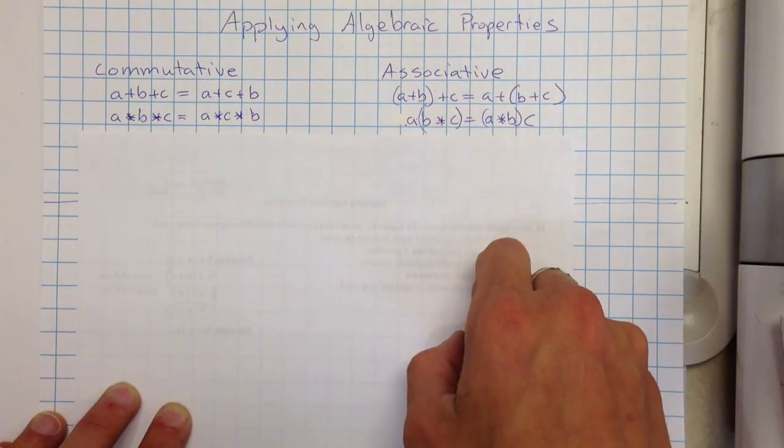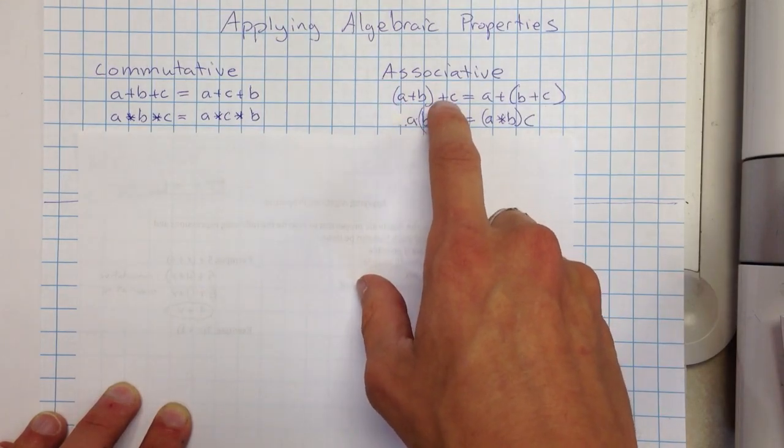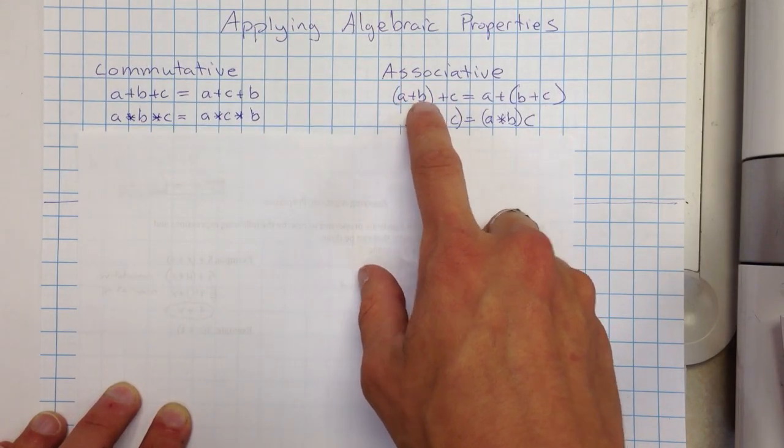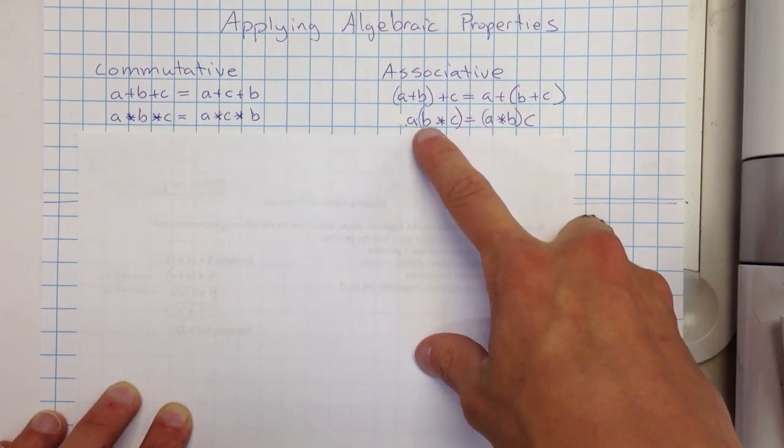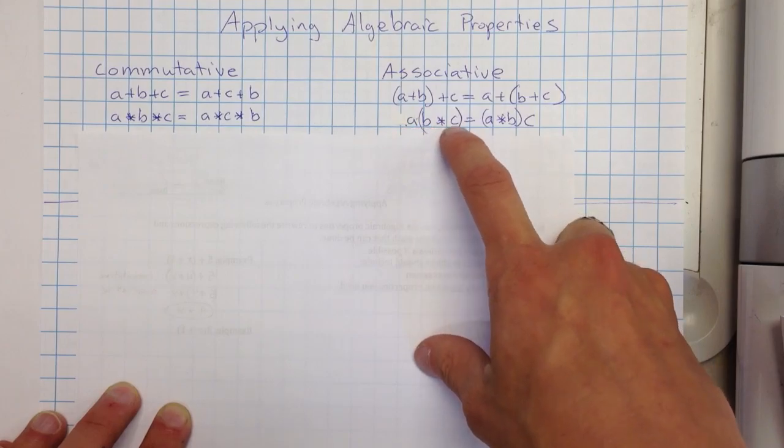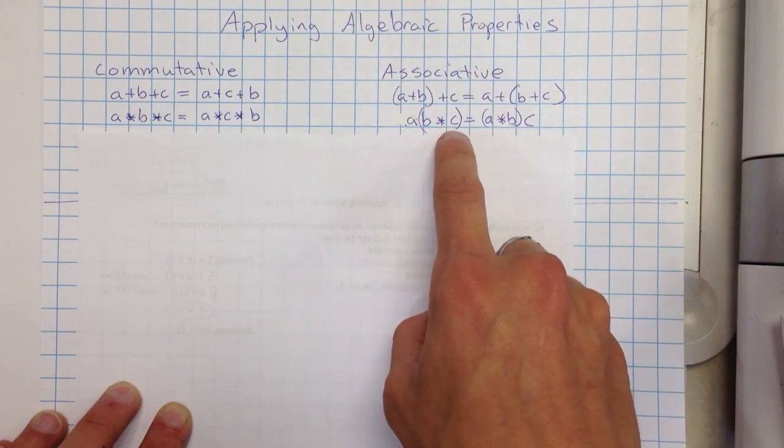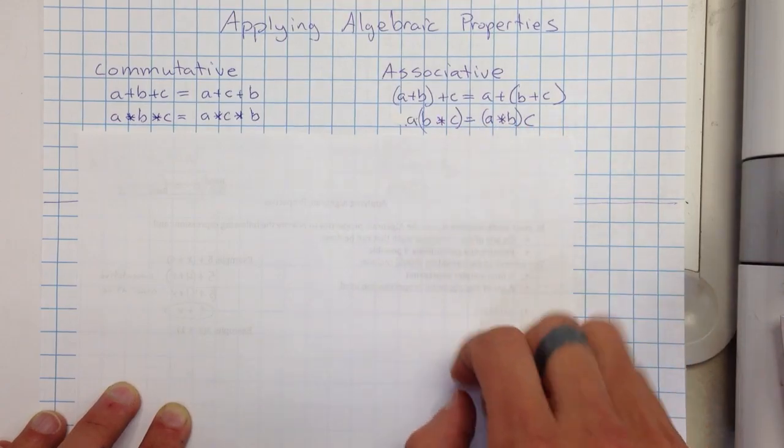Associative has to do with who you're associating with. If I have A, B, and C, and I'm adding all of them together, I can either add A and B first, or I could add B and C first. Same thing with multiplication, or if a number is touching parentheses, that means multiplication. So I have A times B times C, that means I'd multiply B and C first, or I could multiply A and B first. I'm going to get the same answer.